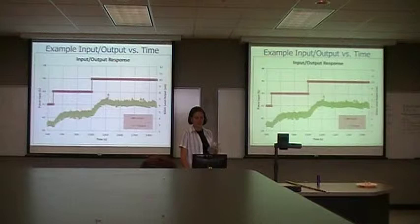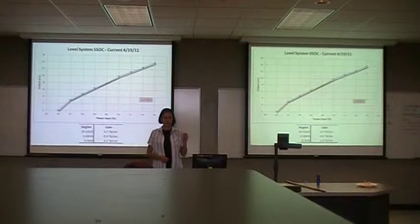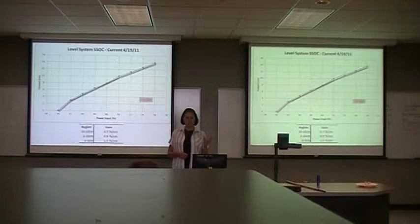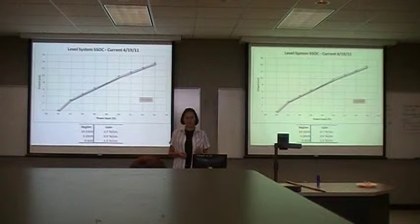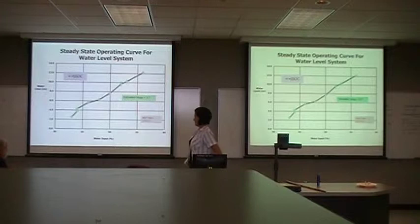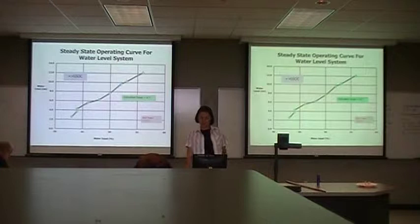This is the new SSOC, and now we have three different gains. From 0 to 3 centimeters, a gain of 1.5; from 3 to 10 centimeters, a gain of 0.9; and from 10 to 12, which is my range, we have a gain of 0.7. And for your viewing pleasure, this is our old SSOC, where we tried to give it one slope. New one, old one — it's behaving much better now.